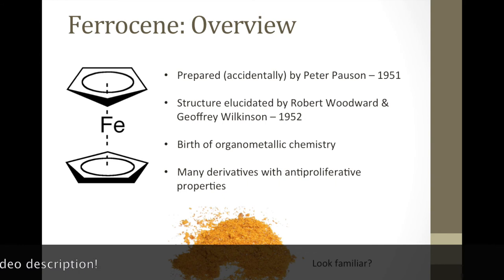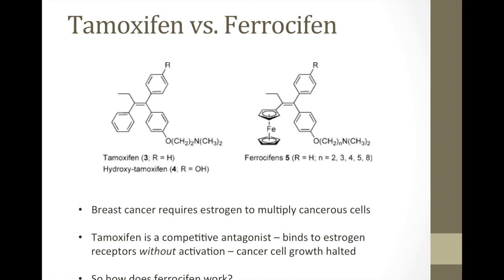Many derivatives of ferrocene and metallocenes in general have anti-proliferative properties. First we'll look at tamoxifen and ferrocifen. Tamoxifen is a known estrogen inhibitor used to help stop breast cancer. The only structural difference between tamoxifen and ferrocifen is that the benzene ring in tamoxifen is replaced by ferrocene itself. Tamoxifen works as a competitive antagonist that binds to estrogen receptors but does not activate them, so preventing estrogen release halts breast cancer growth.